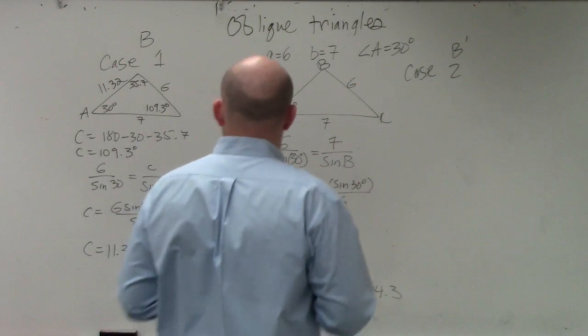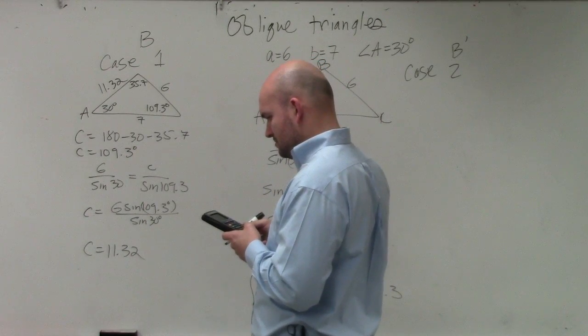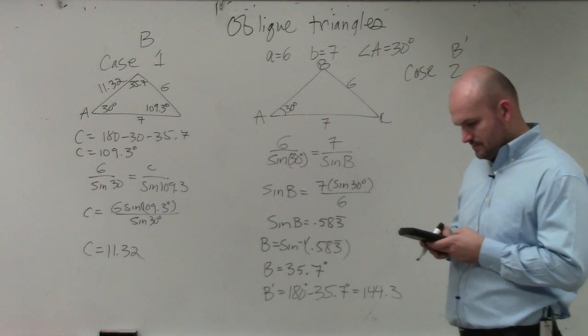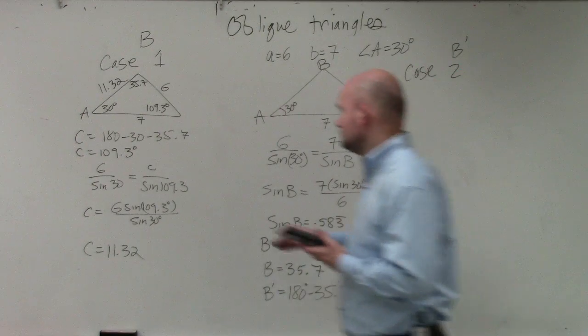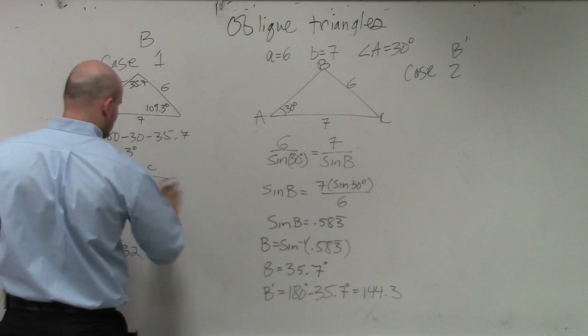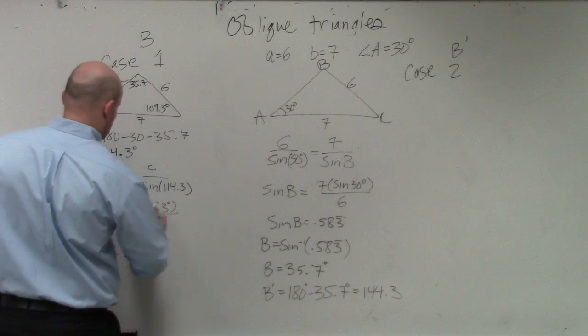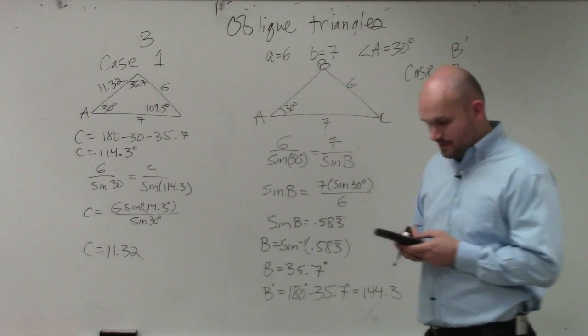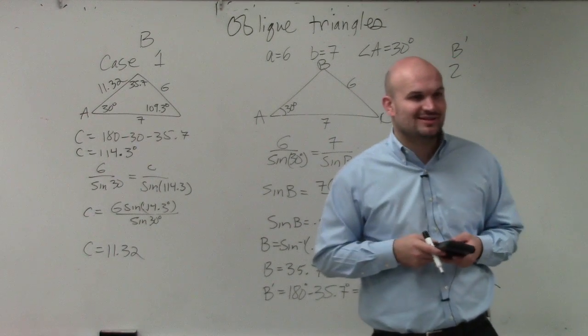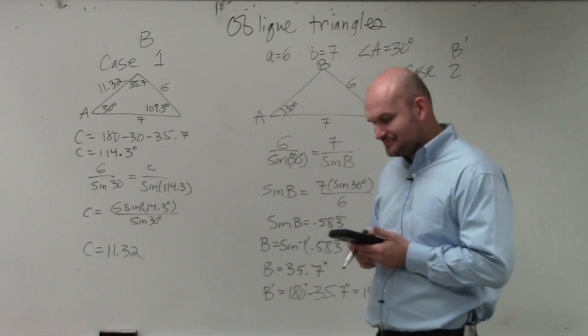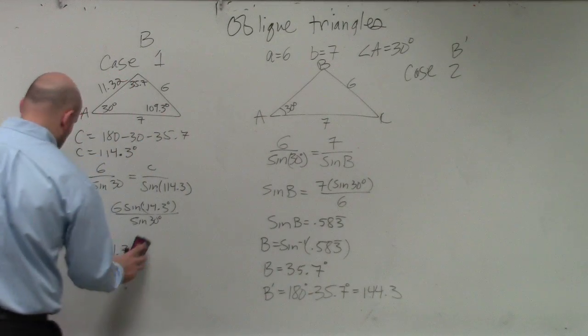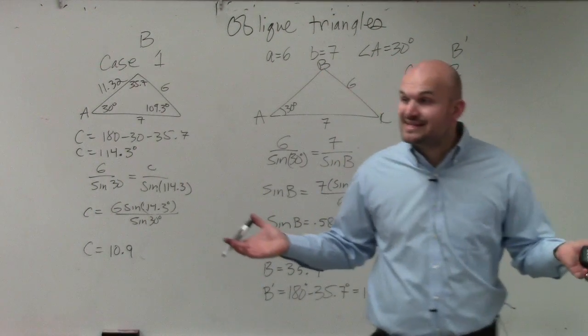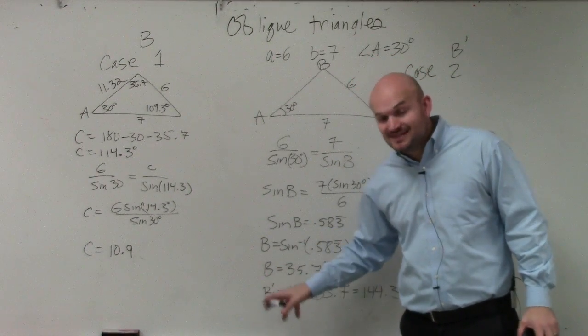What? What's 109? 180 minus 35 minus 35.7? Yeah, you did 30 minus 35.7. Yeah, it is 114. Oh, you're right. I typed it in wrong. Dang it. Thank you for letting me know. So, therefore, I do 6 times the sine of 114.3, and then divide that by the sine of 30 degrees, which everybody should know the sine of 30 degrees by now, which is? Sine of 30 degrees. 1 half. So it's 10.93. Or if I just reduce this, it would be 10.9. Or simplify, or round it, right? So, congratulations. That's case number one. That's for B, though. There's two cases. B or B prime.